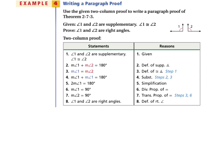We take all of our reasons and examples in order and write them as a two-column proof. In example four, the directions say to use the given proof to write a paragraph proof. Angle one and angle two are supplementary and also congruent. Because they are supplementary, their measures add up to 180 degrees by the definition of supplementary angles.